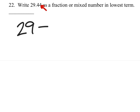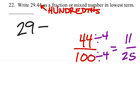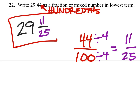Well, the number farthest to the right is in the hundredths position, so it's really just 44 over 100 — 44 hundredths as a fraction. Both of these are divisible by 4. That's very nice. That's 11 over 25. There it is, our mixed number.